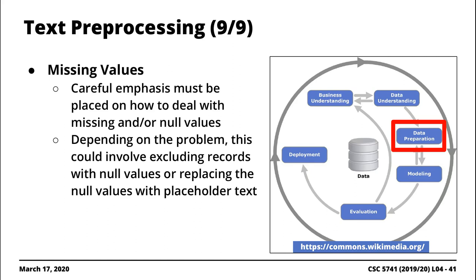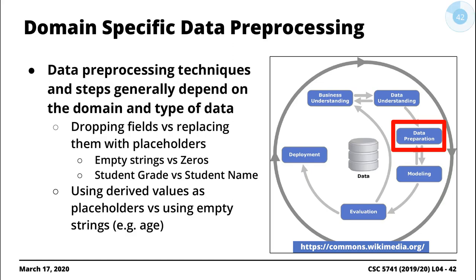For numeric values, it's very common to compute an average. For example, if you're looking at income levels and one observation has no income value, you could get the average of all records that have values and insert that average for the null value. For grades, you might just replace with a zero. The overall decision comes down to dropping the fields, replacing them, or using a derived-value decision — but you'll have to make the decision yourself based on your data.